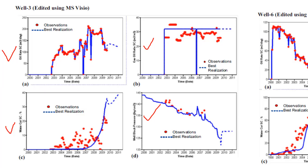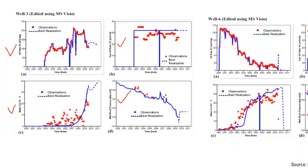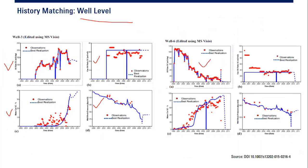Maybe the meter on the field hasn't been calibrated, maybe there is error. You need to check the model and the validity of your data. For another well, water cut shows a very good match, GOR is very good, and pressure is very good — though we do have a few outliers here which we can exclude from the data.